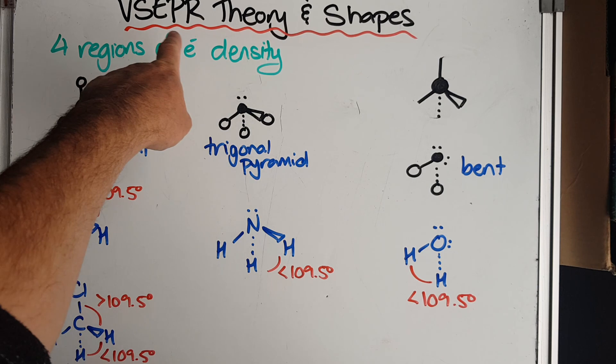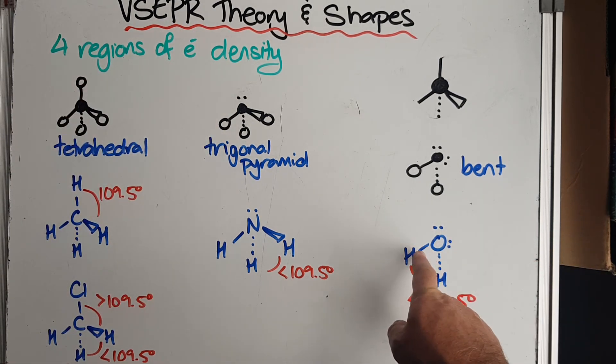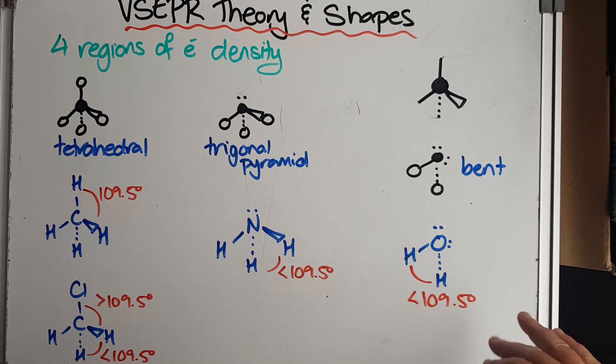Remember, we're applying the VSEPR theory, and the R means repulsion. So these two are repelling the oxygen-hydrogen bonds even more. Notice the way I phrase that. It's repelling the bonds. It's not repelling the hydrogen atoms. It's repelling the hydrogen-oxygen bonds, getting them closer together.